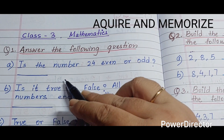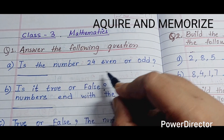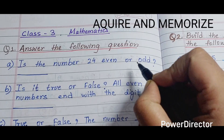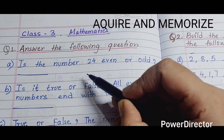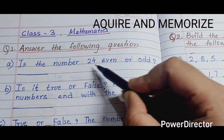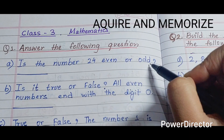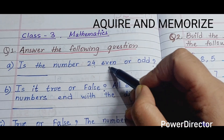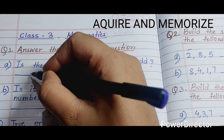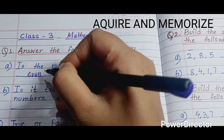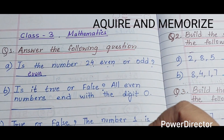The first question is: is the number 24 even or odd? We have to identify whether 24 is even or odd. The number 24 is even, so we will write 'even'.